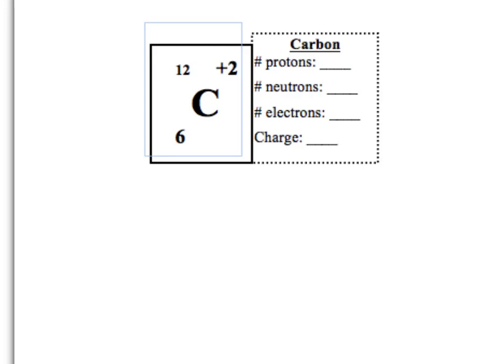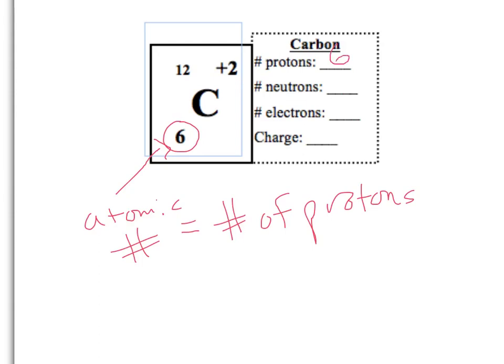The first thing we want to look at is the number of protons, which we can always find by looking at the number in the bottom left side. That's called the atomic number, which equals the number of protons. In this case, since the number here is 6, the number of protons for carbon is 6.